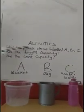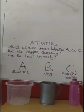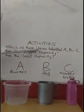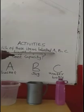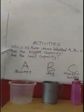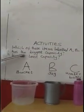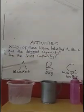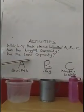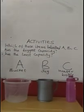I will be leaving you with these activities. Which of these items labelled A, B, C: number one — has the biggest capacity; number two — has the least capacity. See you in our next class.